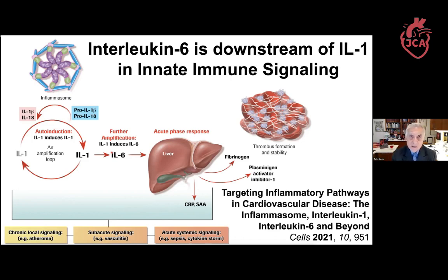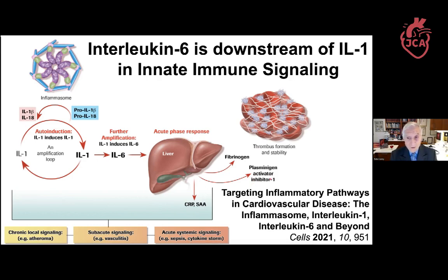Why were we interested in IL-6 in the mid-1980s? Because we already knew it was the switch that turns on the acute phase response in the liver — telling the hepatocyte to divert substrate and energy from housekeeping proteins like albumin toward producing acute phase reactants, prominently fibrinogen (the precursor of clots) and plasminogen activator inhibitor-1. A great biomarker of inflammation — though not in the causal pathway — is C-reactive protein, and another pentraxin, serum amyloid A.